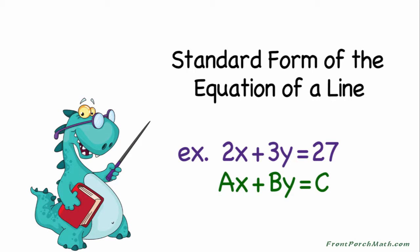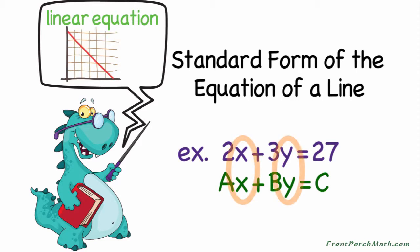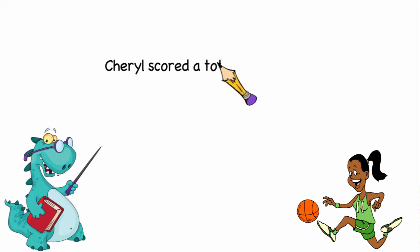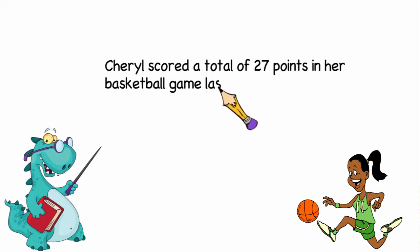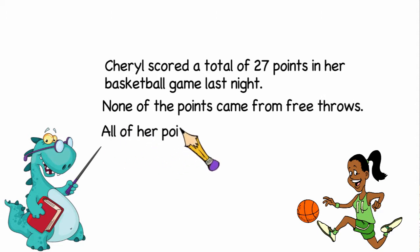We're going to be dealing with linear equations that involve two unknown variables. Here's the problem: Cheryl scored a total of 27 points in her basketball game last night. None of the points came from free throws. All of her points came from either two or three-point baskets.